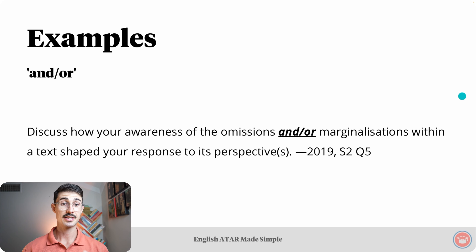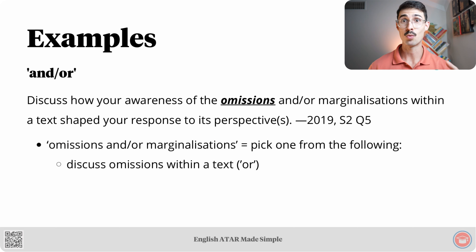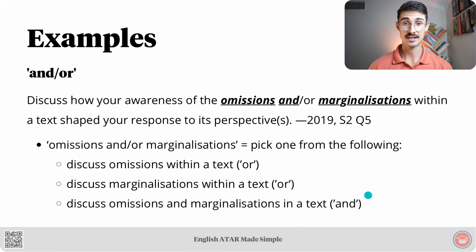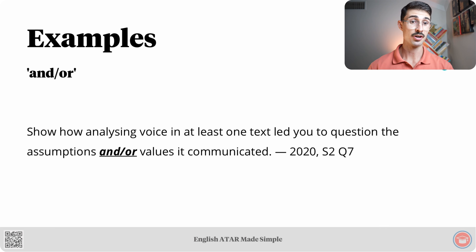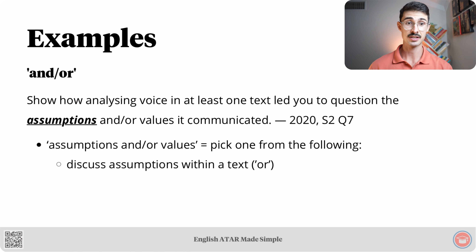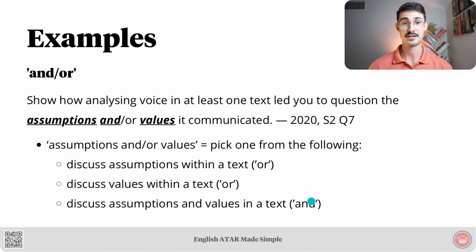Finally, some and/or examples. 'Discuss how your awareness of the omissions and/or marginalisations within a text shaped your response to its perspective or perspectives.' The phrase 'omissions and/or marginalisations' means you should pick one of the following: discuss omissions within a text, discuss marginalisations within a text, or discuss both omissions and marginalisations. Another example: 'Show how analysing voice in at least one text led you to question the assumptions and/or values it communicated.' The phrase 'assumptions and/or values' means you should discuss assumptions, values, or assumptions and values — pick one of those three options.